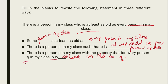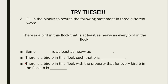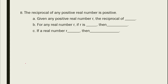Try this at home: Fill in the blanks to write the following statement in three different ways. Statement 1: 'There is a bird in a flock that is at least as heavy as every bird in the flock.' Statement 2: 'The reciprocal of any positive real number is positive.' Fill in: 'Given any positive real number R, there is a reciprocal of blank.' And: 'For any real number R, if R is blank, then blank.' And: 'If a real number R is blank, then blank.'